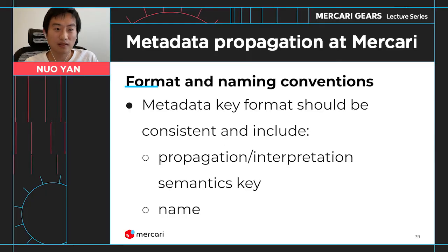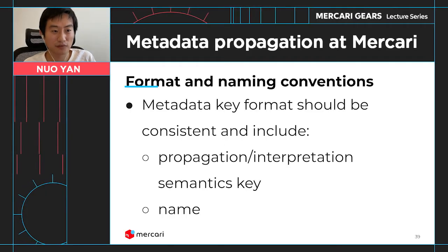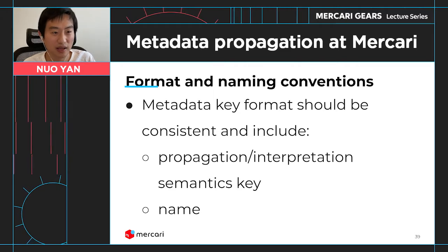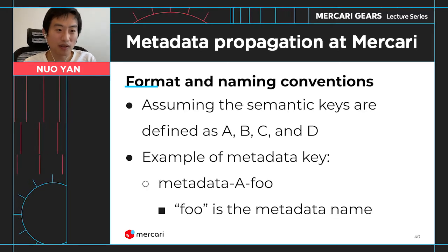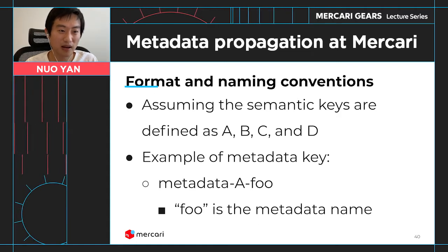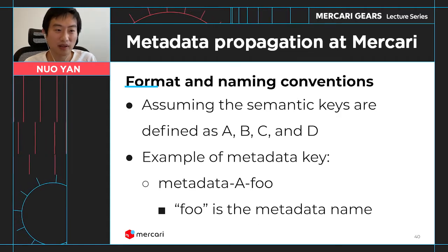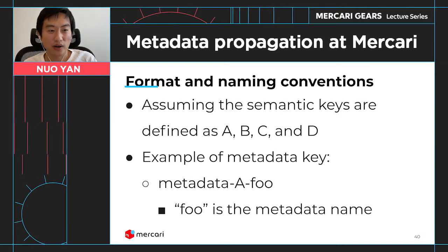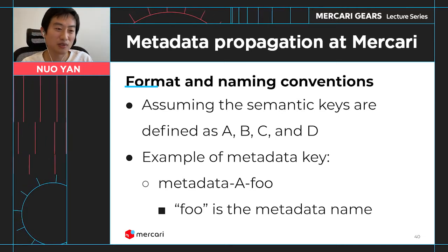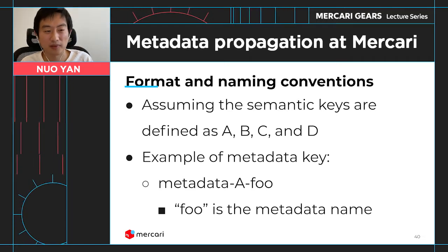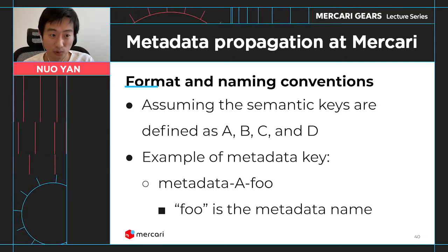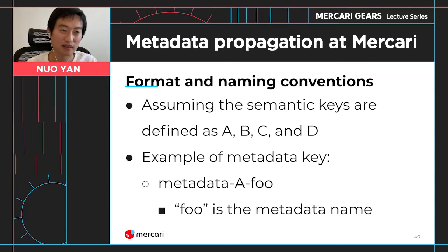In order for metadata to be propagated using the middleware, the key format has to be consistent. In our case, we designed metadata keys to have the propagation and interpretation semantics and the name. If we name the four semantics as ABCD, the metadata name could be 'metadata-[one of ABCD]-[actual name of the metadata]'. By doing so, the middleware can use regular expressions to look at these keys in the request header, or in the PubSub case the body, and then extract the metadata, convert them, and store them to an internal store. You can also know which semantic applies to the metadata.